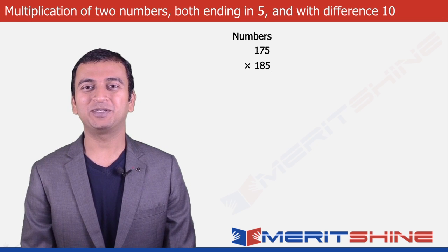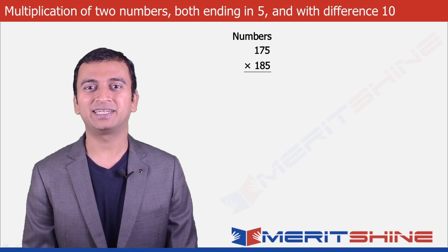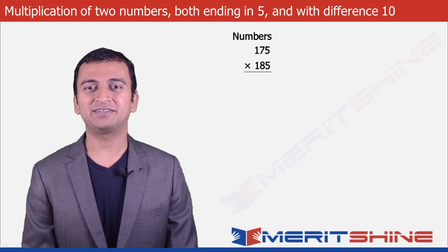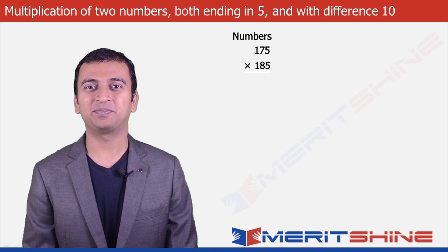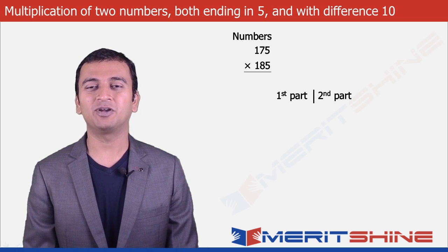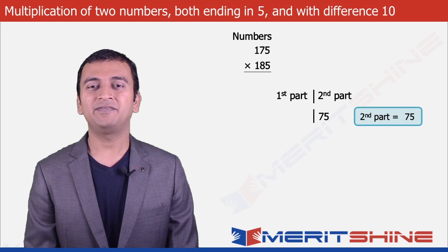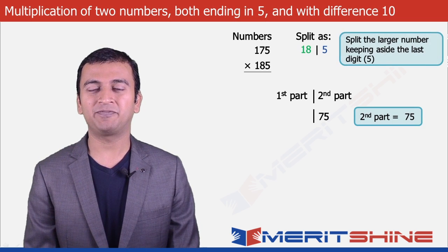Another interesting case would be to find the product of two numbers which end in 5 and differ by 10. Let us take 175 into 185 as an example. To write down the answer, we will have to again make two parts. The second part would always have 75 and the first part, we will take the bigger number and drop 5 in it.